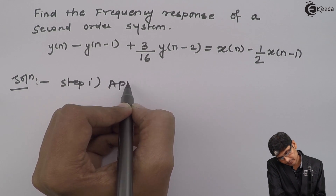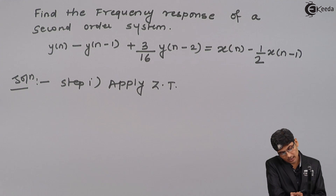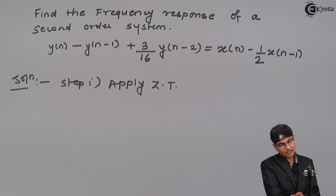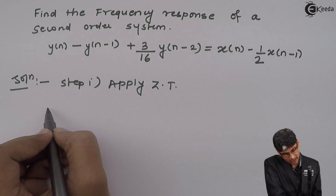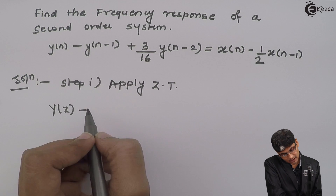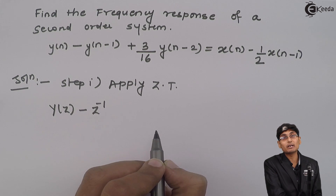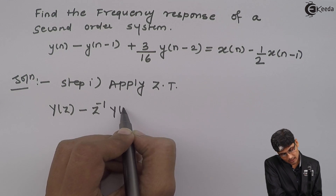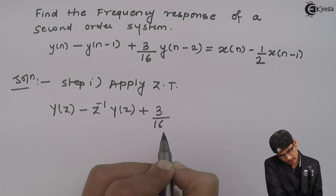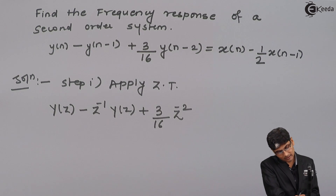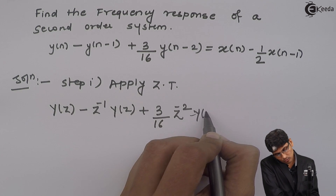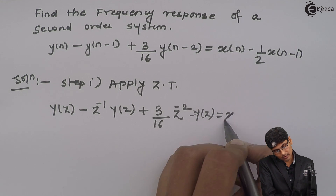Solution step one: apply the Z-transform. The Z-transform replaces y(n) with Y(z) and x(n) with X(z), and wherever there is a delay we multiply by negative powers of z. So we have Y(z) minus z^(-1)·Y(z) plus (3/16)·z^(-2)·Y(z) equals...